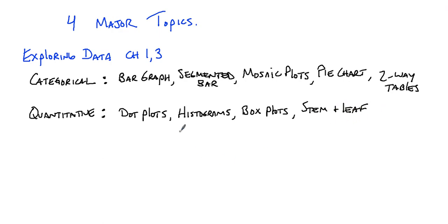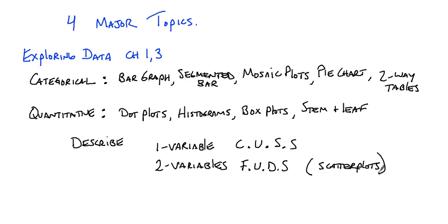So I could almost guarantee that you're going to have to make one or more of those. That would probably occur in part A because it's usually pretty easy to make these graphs. And then it's probably going to ask you to describe the graph. So we have two acronyms for that. If you have one variable, then you are going to use the acronym CUS to describe that graph. If you have two variables, the acronym that we used was FUDS. And this was when we made scatter plots.